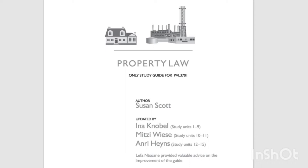Patrimonial law regulates all rights of which the objects or assets form part of a person's estate. In this broad sense, everything that forms part of a person's estate can be described as property. Property therefore includes a variety of assets, such as things — for example, land, a car, a computer, and a mobile phone.